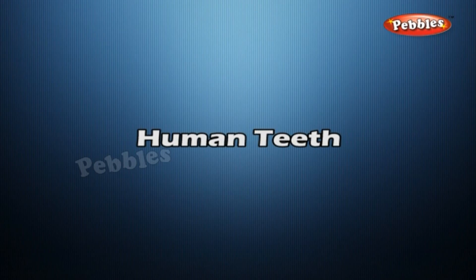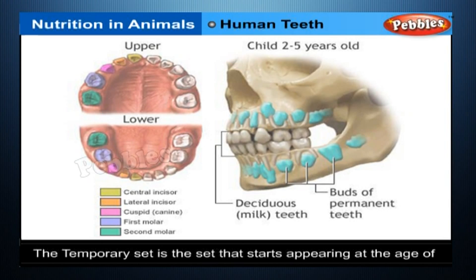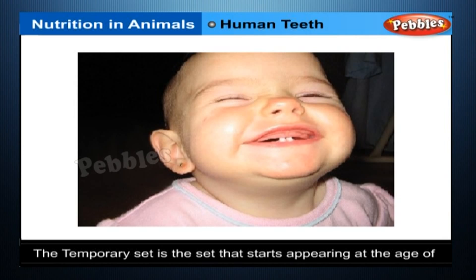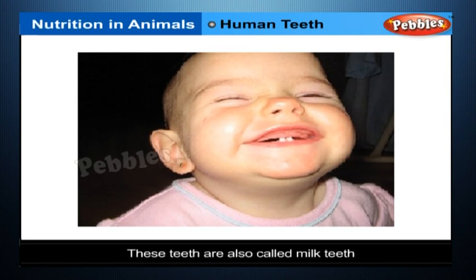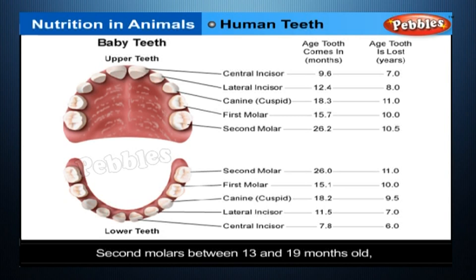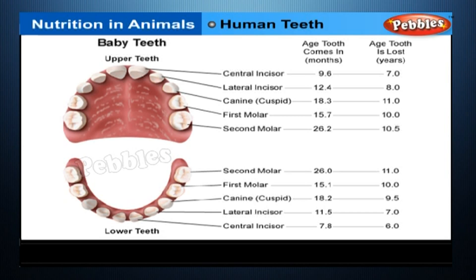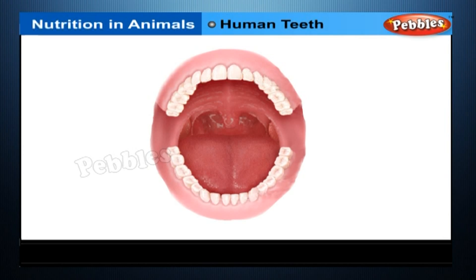Human Teeth. We develop two different sets of teeth in our lifetime: the temporary set and the permanent set. The temporary set starts appearing at about 2 and a half to 3 months of age and completes in about 2 years. These are also called milk teeth, and there are 20 of them. Front teeth usually erupt when a child is 6 to 12 months old, second molars between 13 and 19 months, and canines at 19 months or older. Though the temporary set is replaced by the permanent set, it plays a very important role in the proper alignment and spacing of the permanent teeth. Around age 6, milk teeth start giving way to permanent teeth, which erupt earlier in girls.